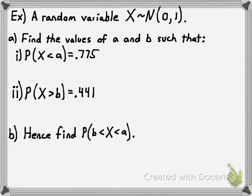Let's look at how that's going to work out. Here's our first set of examples. We're going to say that a random variable x is normally distributed with a mean of 0 and a standard deviation of 1 — so this is a standard normal distribution. I want us to find the values of a such that the probability that x is less than a is .775, and the probability that x is greater than b is .441. There's a new calculator command called the inverse normal command that helps you find the value of a number given the probability that something is less than that number.